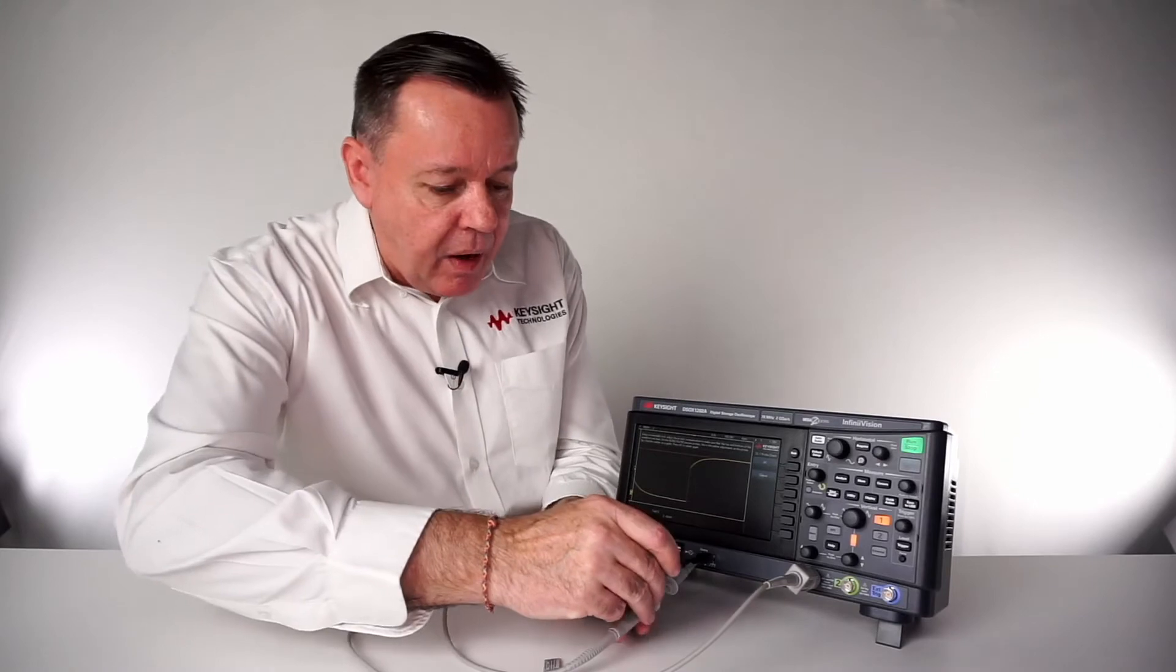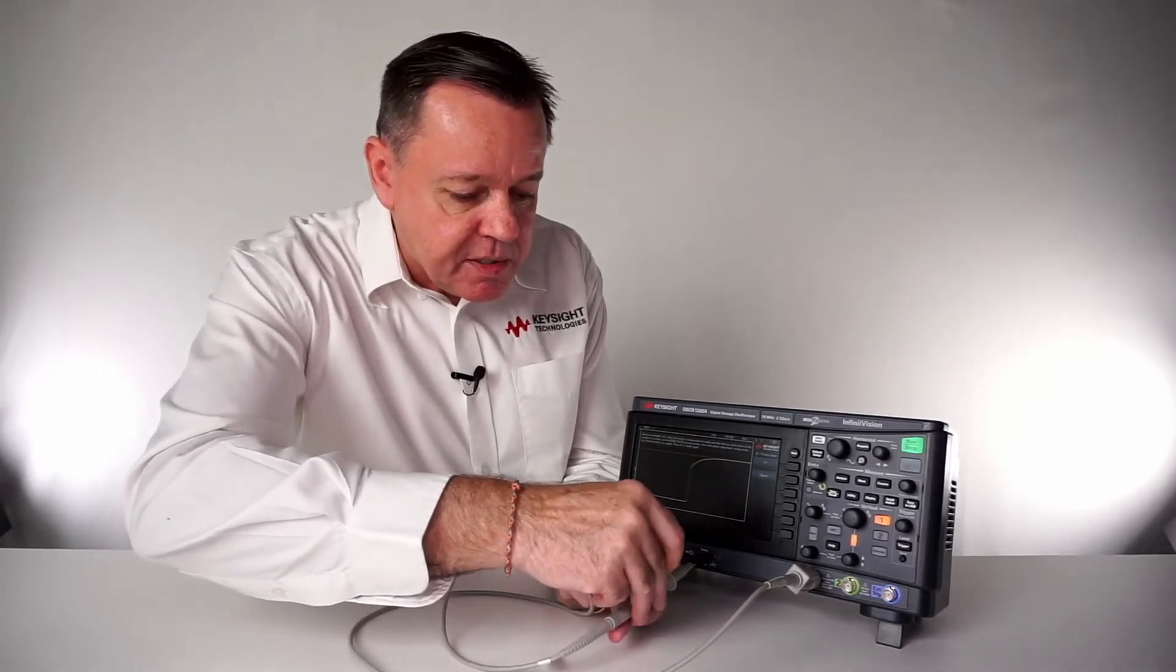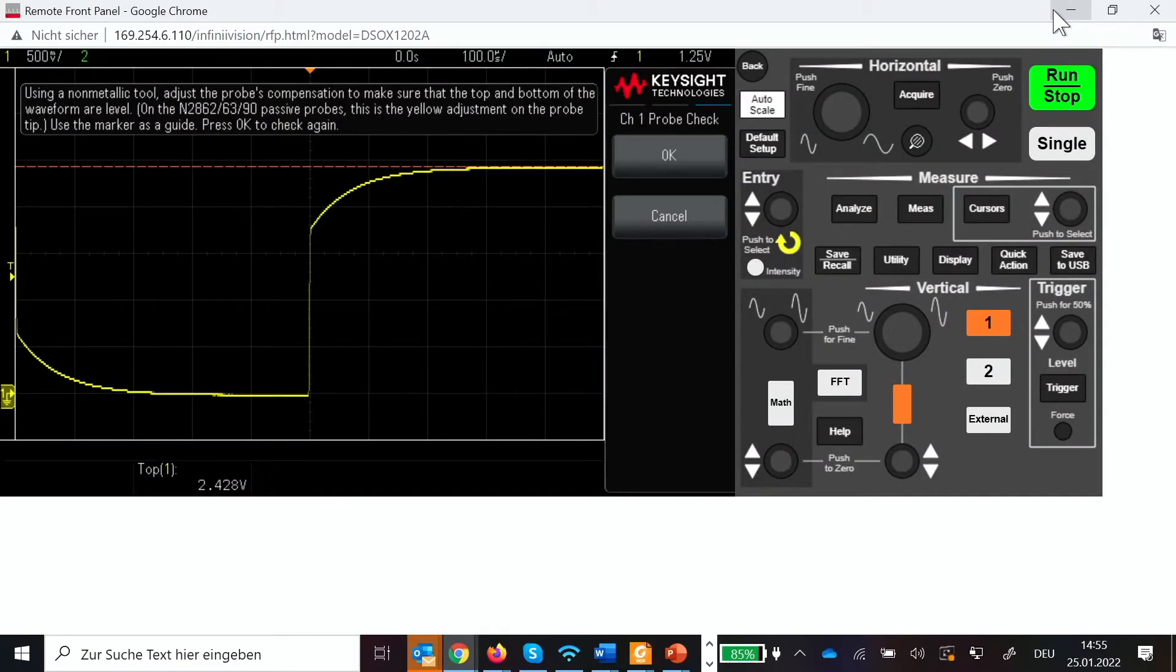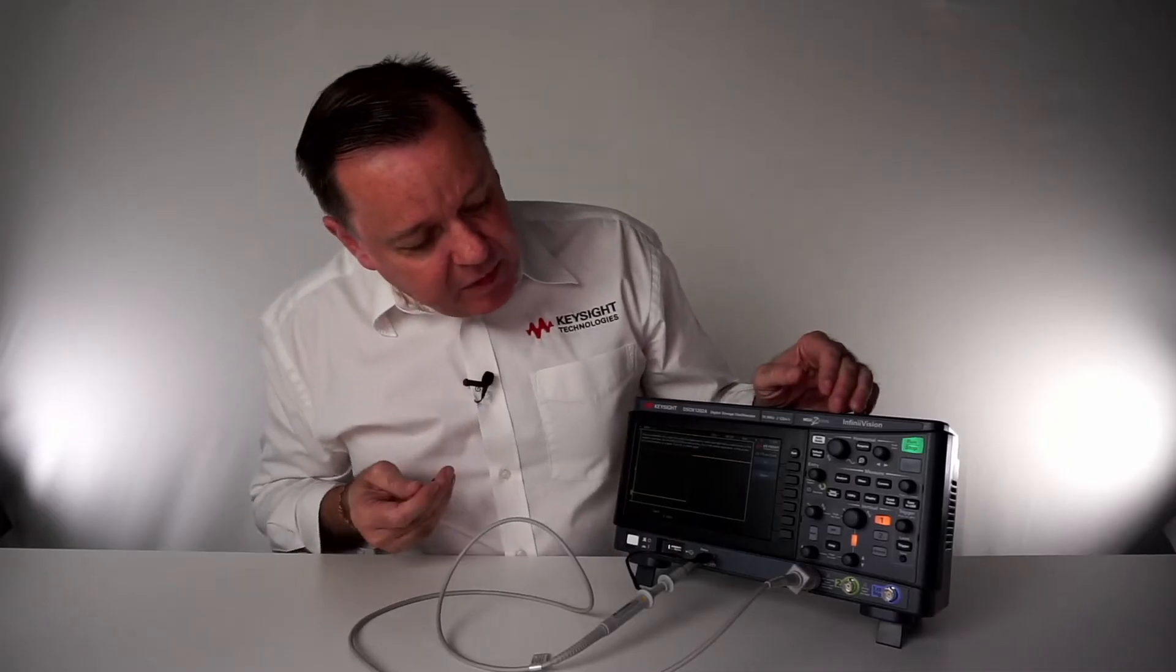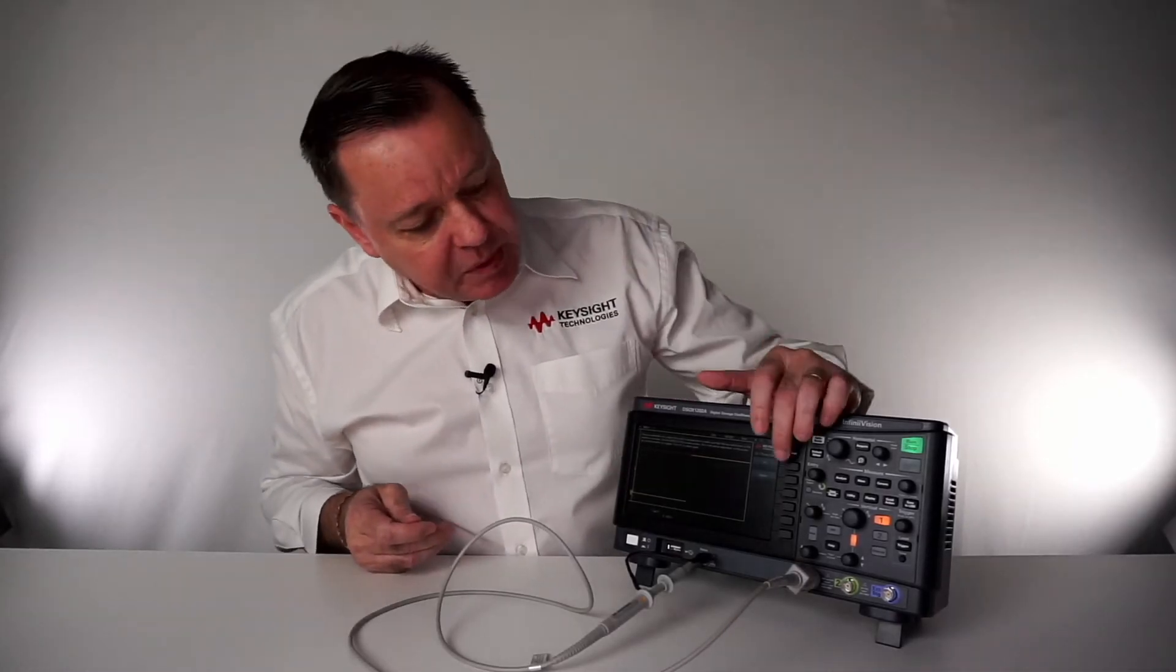Let me show you now how to adjust the probe. Important is that it's visible as a straight line up and below. So this one, for me, the signal is correctly compensated.